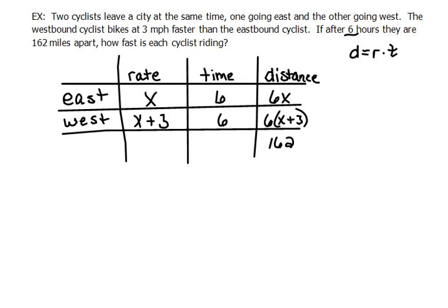Think about it this way: they start from this particular point, one going one direction and the other going the other direction. After 6 hours they are so far apart. So this cyclist's distance plus this cyclist's distance together would have to be 162 miles.